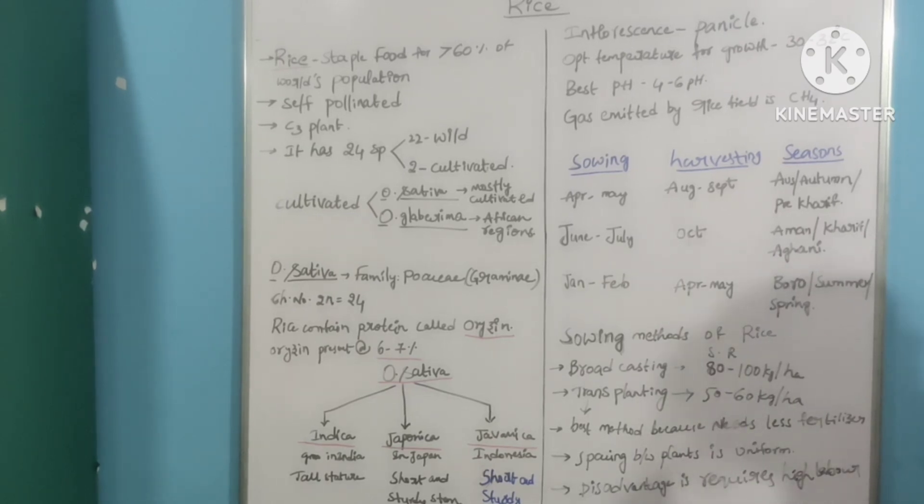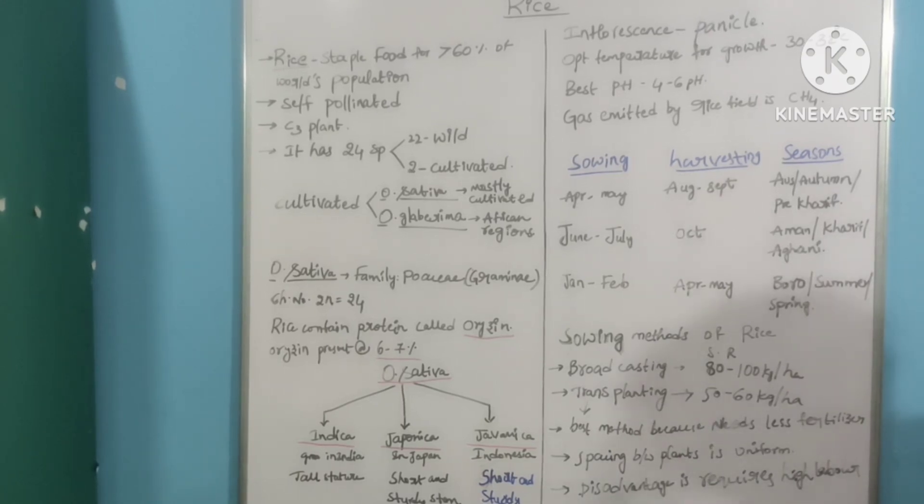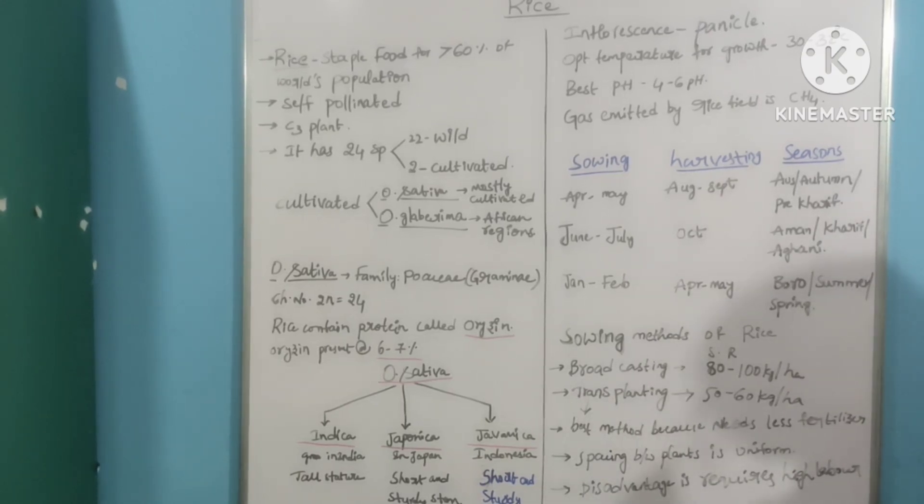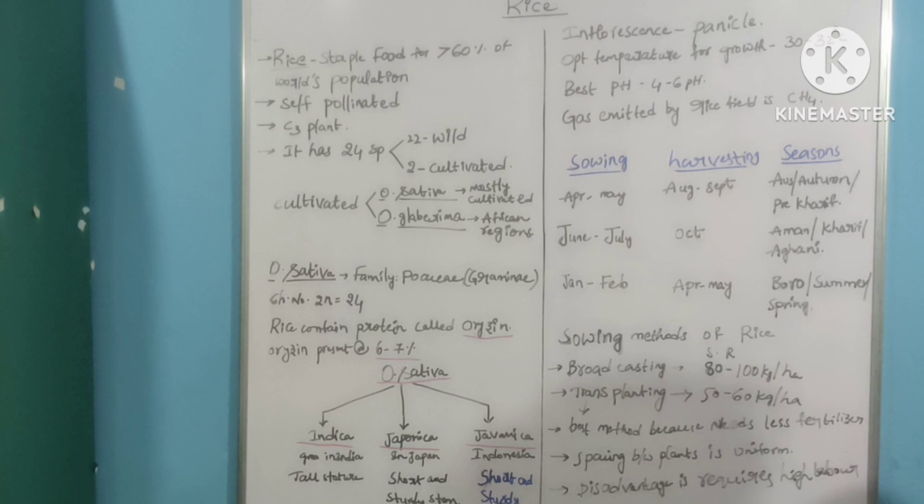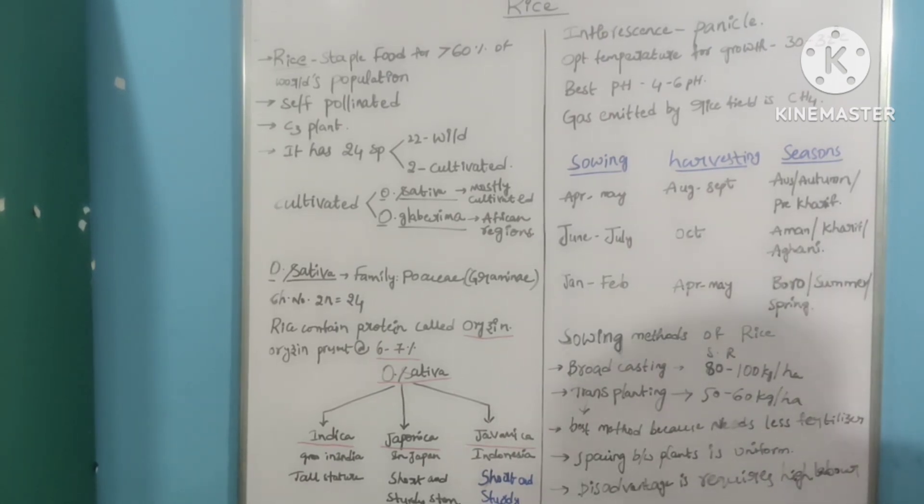Oryza sativa is mostly cultivated species and Oryza glabrima is cultivated in African regions. The family of Oryza sativa, that is rice, is Poaceae. It is also Graminae.